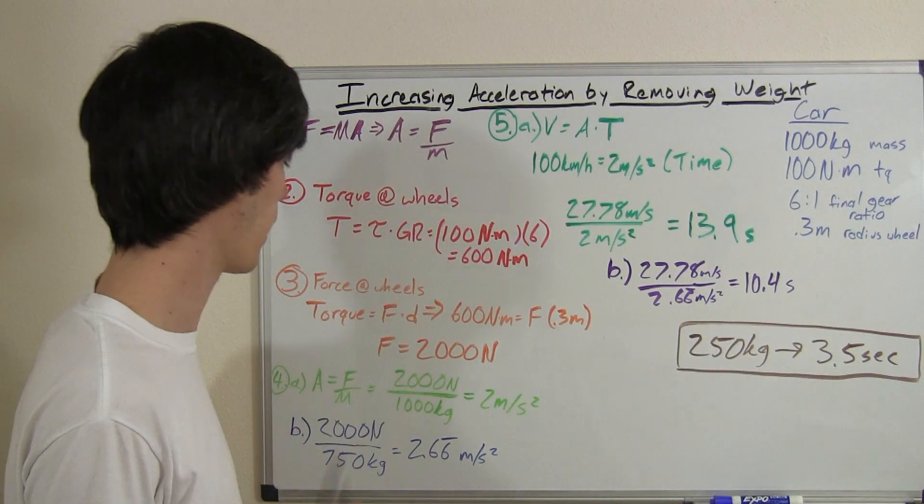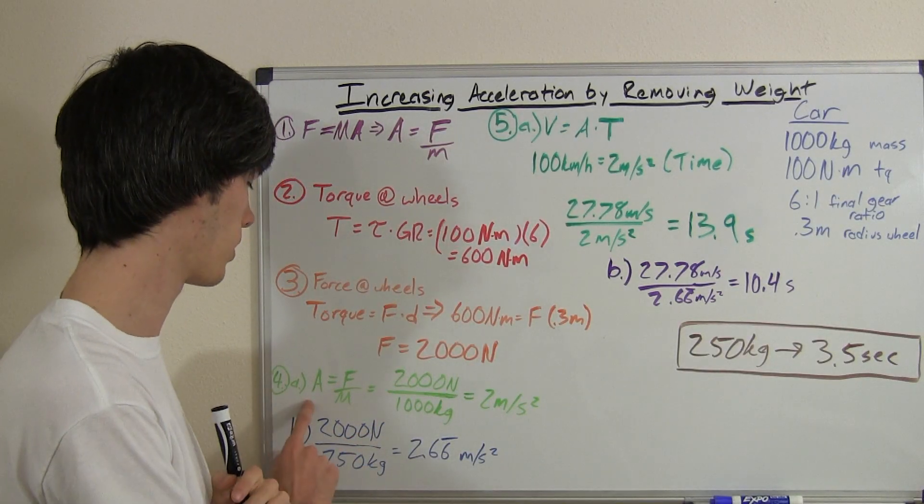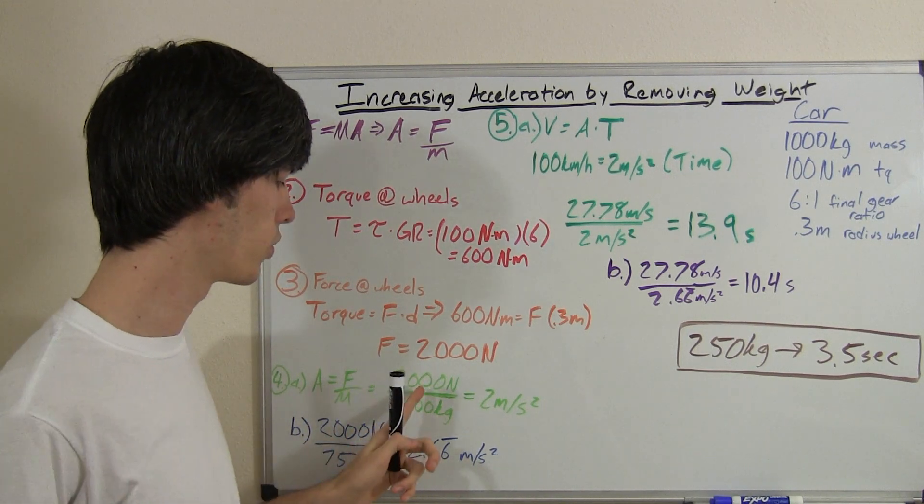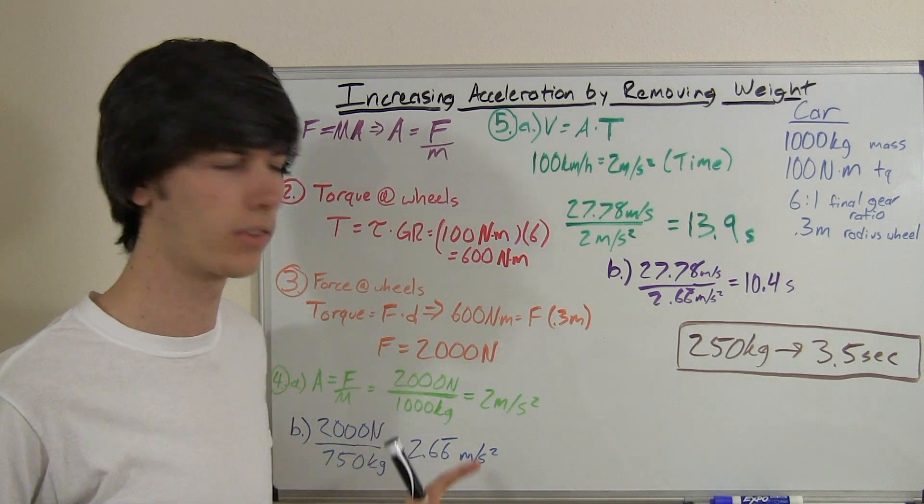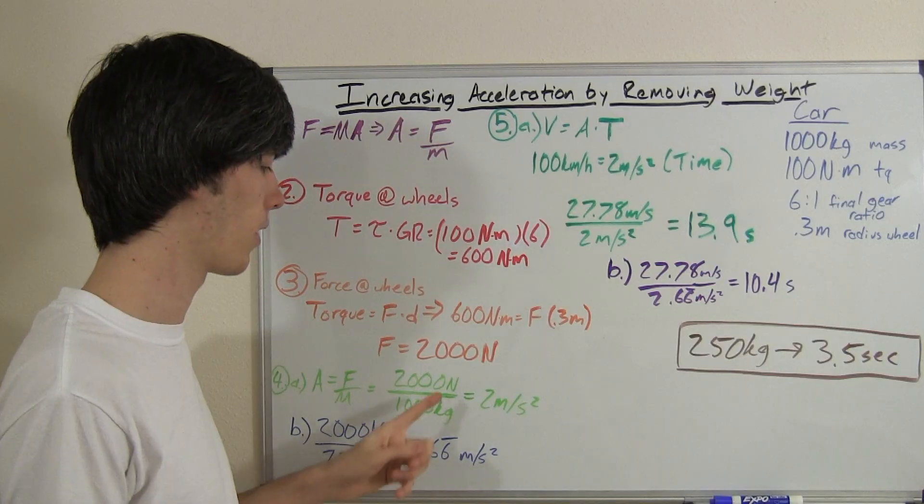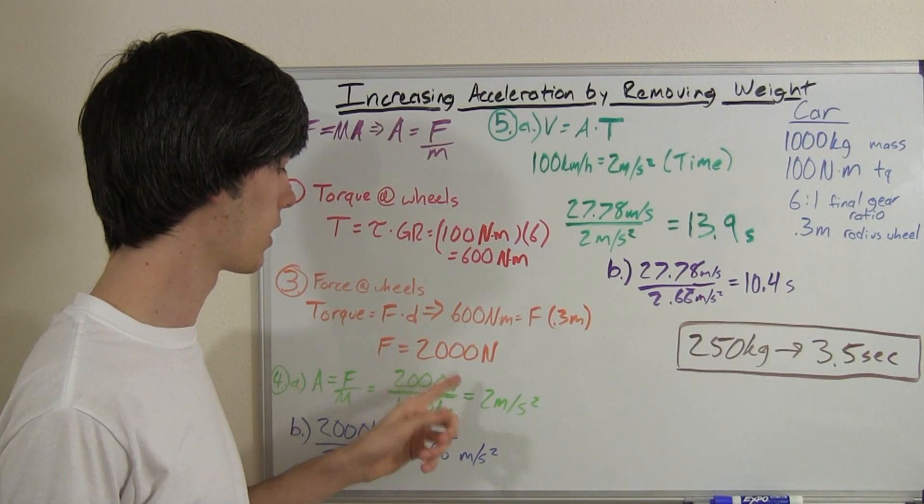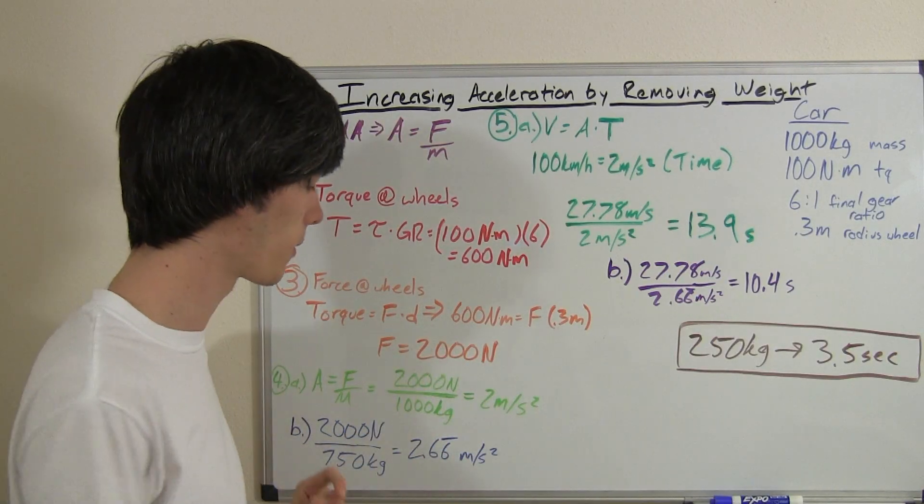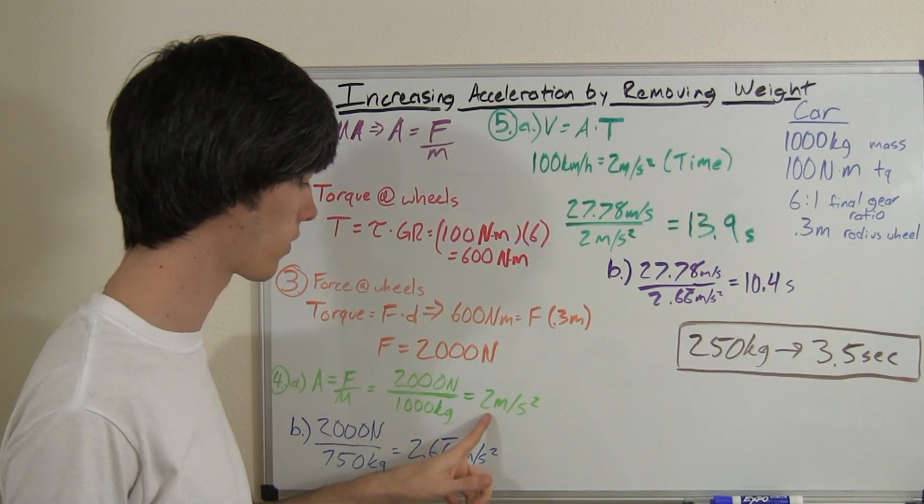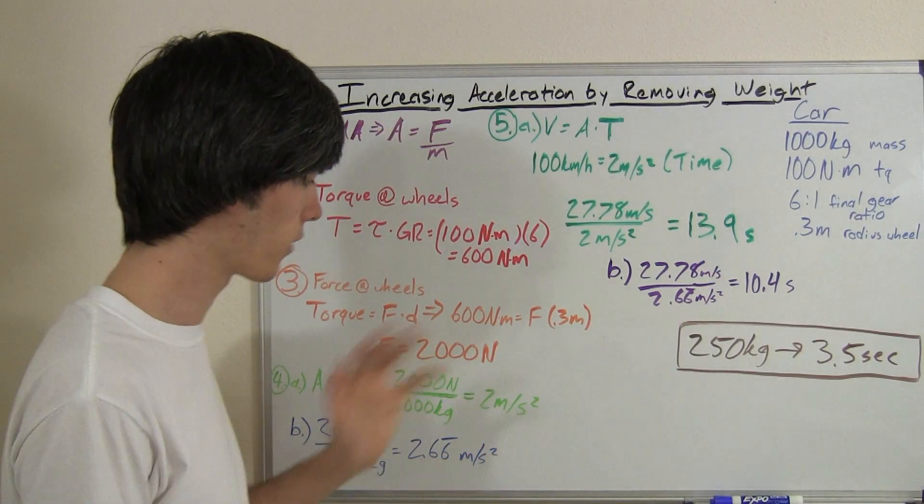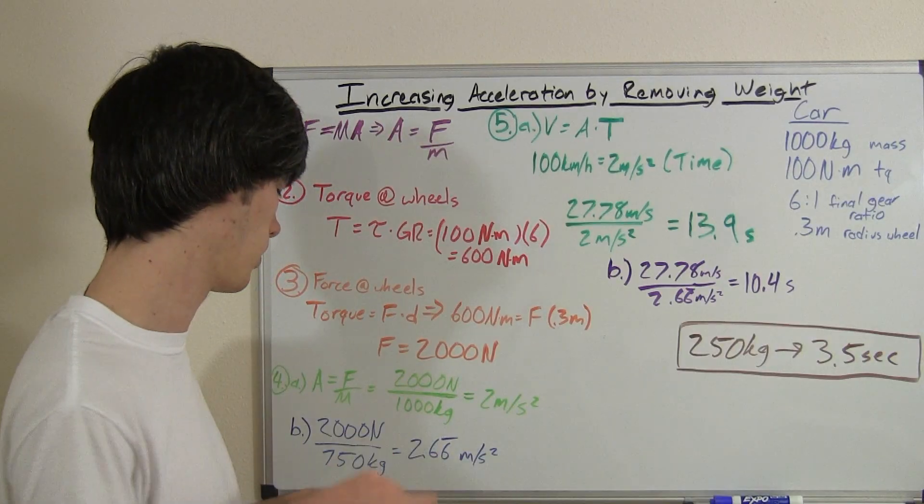Great. So now we know force and mass, so we can find out acceleration. Acceleration equals force over mass. 2,000 newtons divided by 1,000 kilograms. Newtons are in units of kilogram times meters per second squared. So when you divide that out, you get an acceleration of 2 meters per second squared. That's roughly about 0.2 g's.